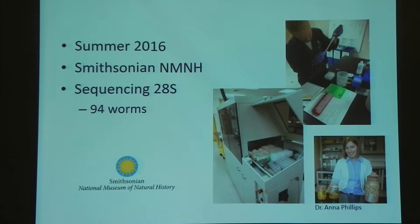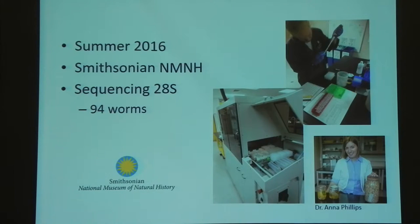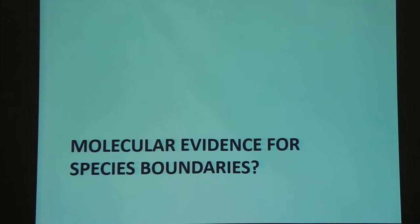I have done some molecular work so far as a preliminary investigation. Last summer I went to the Smithsonian National Museum of Natural History — one of the co-authors on this study works there and was very helpful. I got to sequence 28S, which is a pretty large gene, for 94 worms — a big accomplishment to do in just three weeks. The question is: is there molecular evidence for species boundaries? Did we find anything? This is the first time anybody has looked at genetic data for this genus, so nobody really knew what we'd find or which gene would work best.